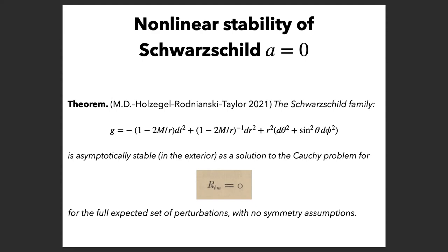Why do I say 'for the full expected set of perturbations'? Schwarzschild is a one-parameter sub-family of the larger two-parameter Kerr family, so there's no way the one-parameter sub-family could be asymptotically stable in general. The best you can expect is that this is stable modulo the Kerr family. There's a finite codimension hypersurface in the moduli space of solutions which exactly characterizes approaching Schwarzschild.